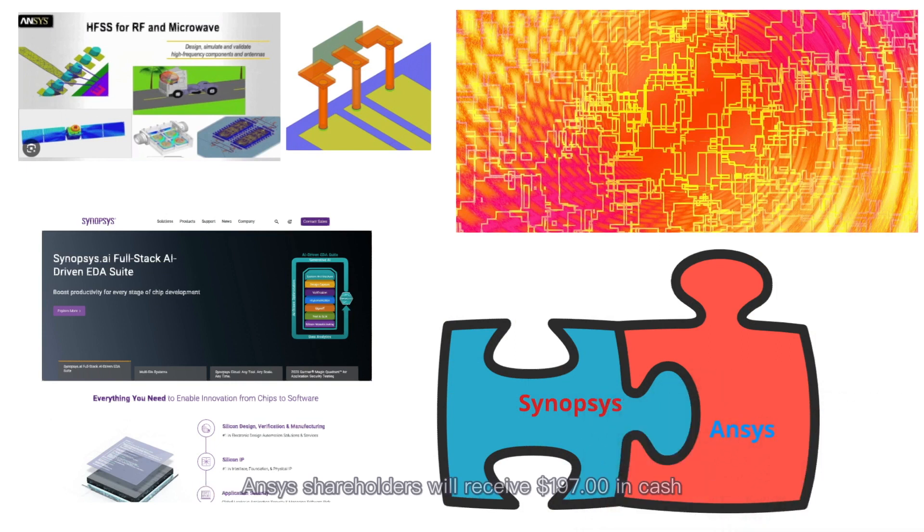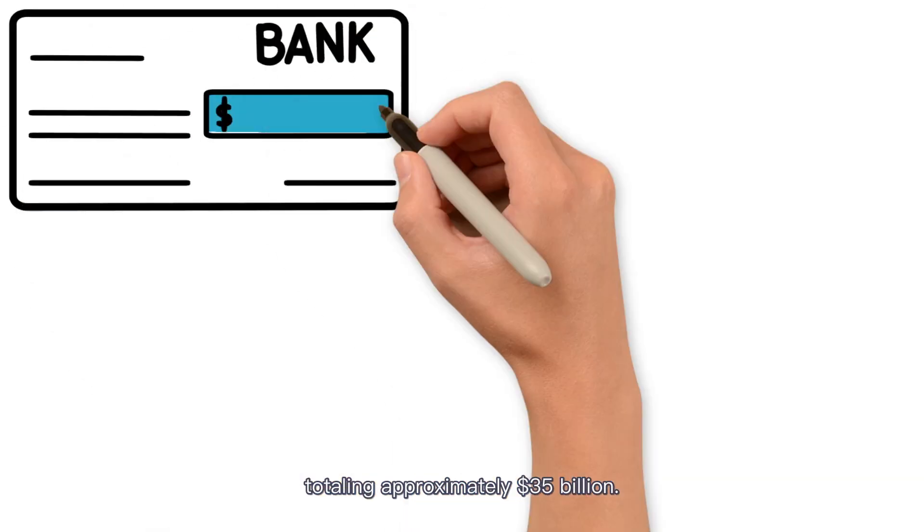Under the agreement, Ansys shareholders will receive $197 in cash and 0.3450 shares of Synopsys common stock for each Ansys share, totaling approximately $35 billion.